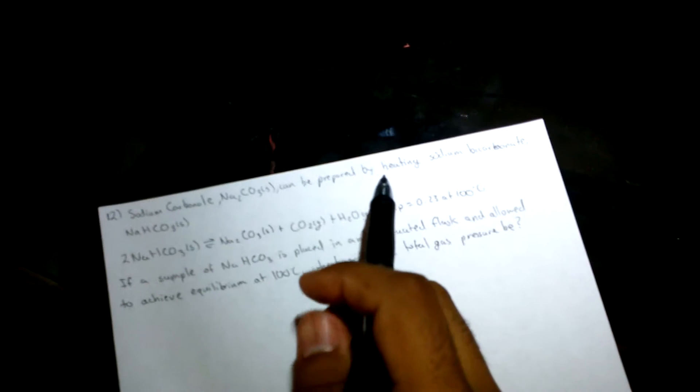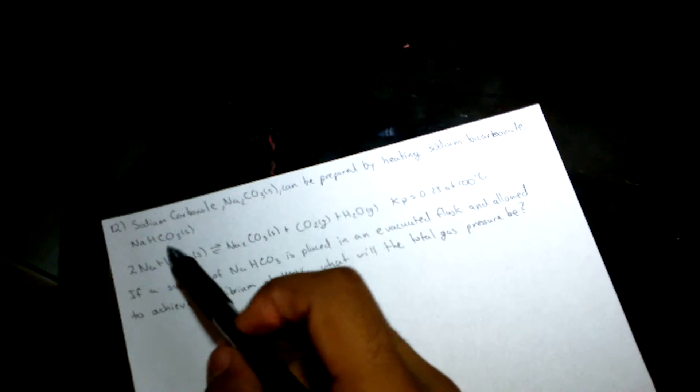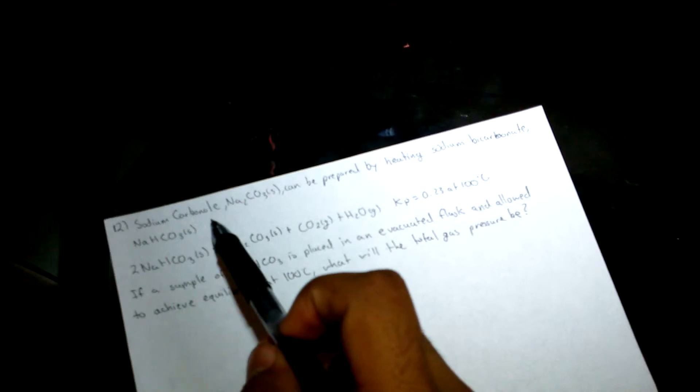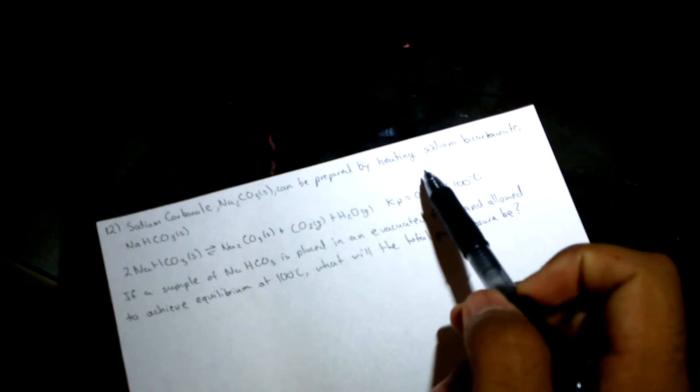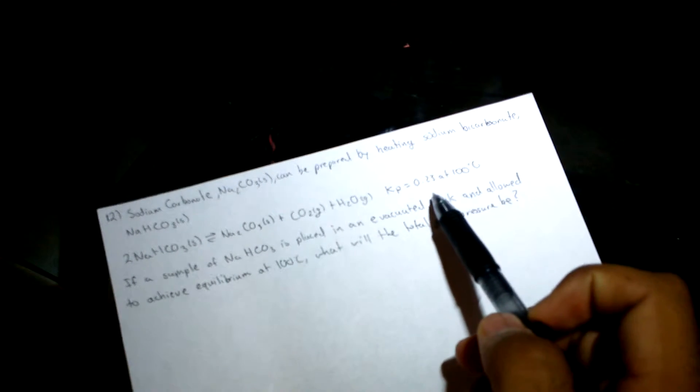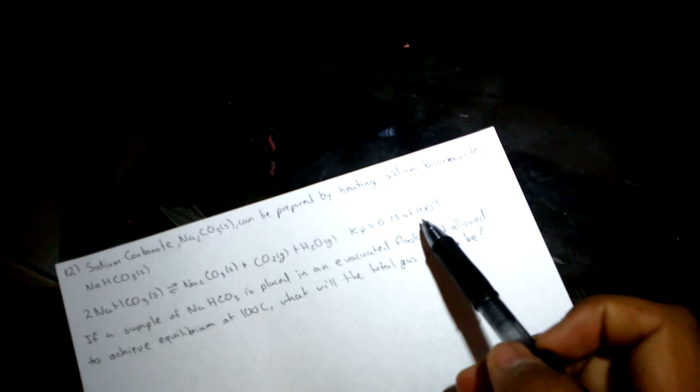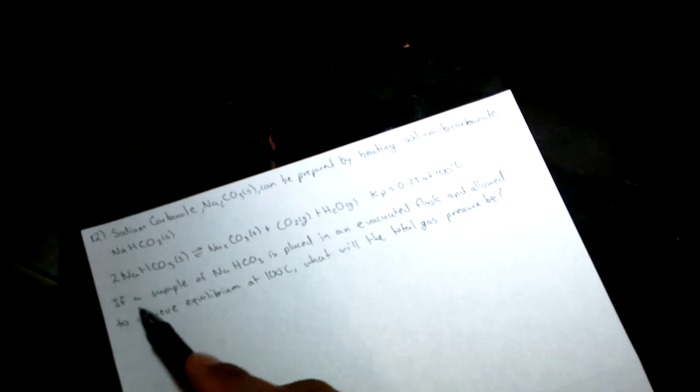Hey guys, today we're going to do problem number 12. We have sodium carbonate that can be prepared by heating sodium bicarbonate. The equation shows that KP equals 0.23 ATMs at 100 degrees Celsius.